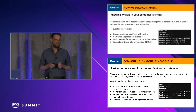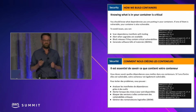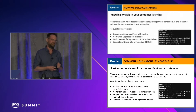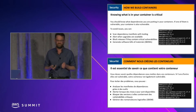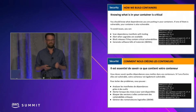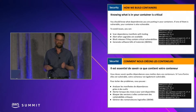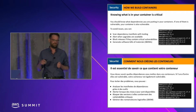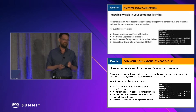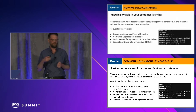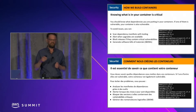My first recommendation: knowing what is in your container is critical. You should know what dependencies you're putting into your containers — if one of them is vulnerable, your container may also be vulnerable. To avoid issues, you can scan dependency manifests with tooling, create automatic alerts when upgrades are available, block releases if the container contains critical vulnerabilities, or generate a software bill of materials (SBOM). A dependency file that specifies what dependencies and versions you're using makes it easy for an automatic tool to flag known vulnerabilities.